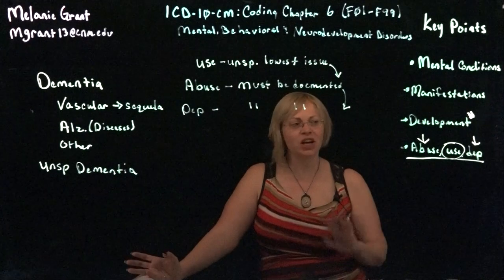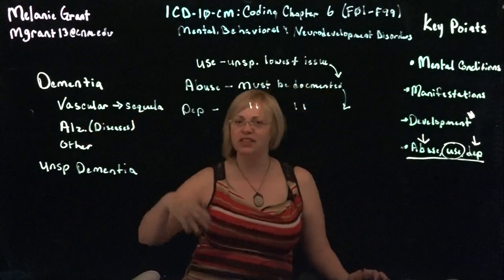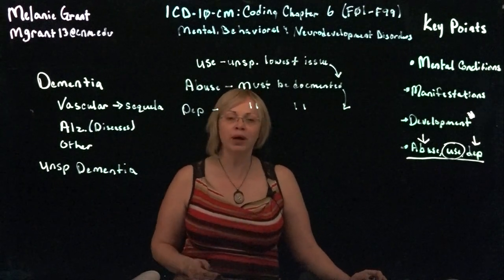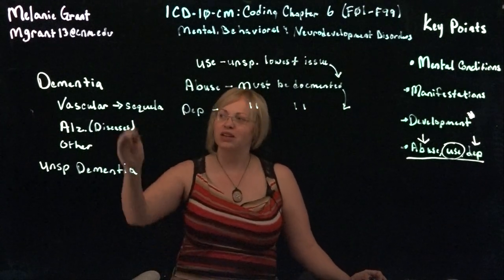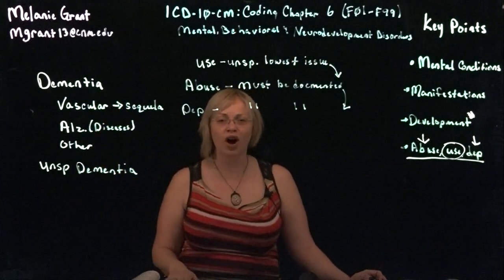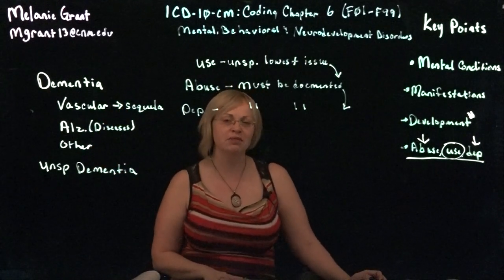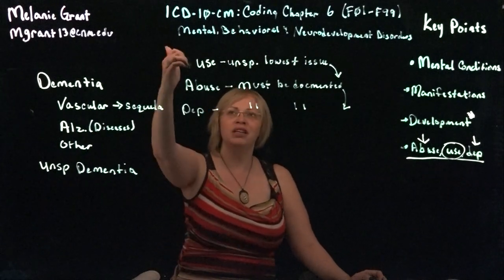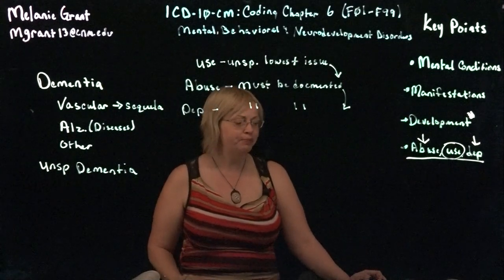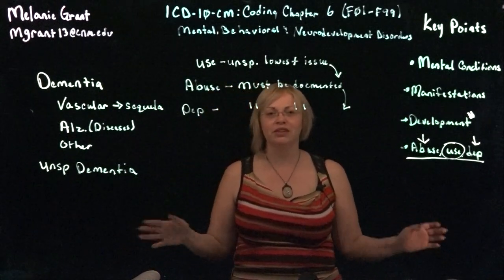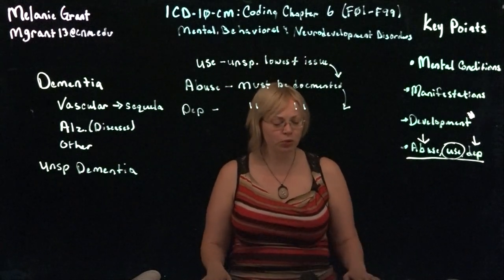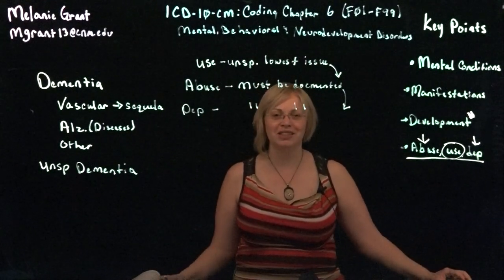That's all for this topic. The key takeaways are understanding the differences in coding the different types of dementias, making sure to code the underlying cause of dementia first because it is considered a condition caused by something rather than something that just occurs, and being aware of the differences between use, abuse, and dependency. That's all for this week — make sure you stay tuned and check our other videos as we cover other systems.